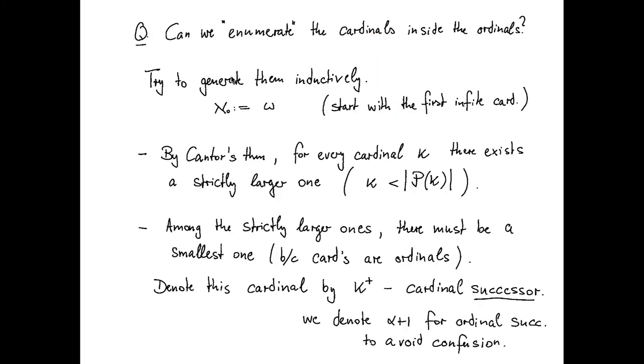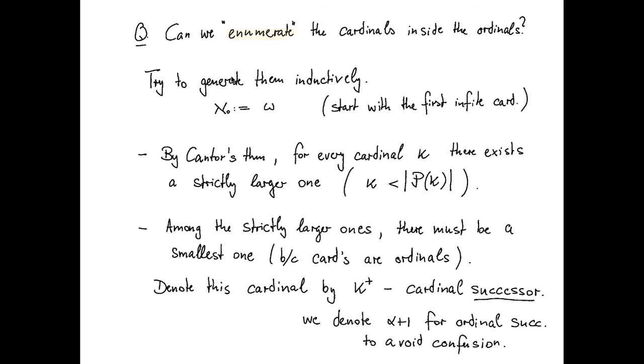So we know now that the cardinals sit inside the ordinals—every cardinal is an ordinal, but not every ordinal is a cardinal. So the question would be now, can we somehow enumerate the cardinals inside the ordinals in a nice way? And one way to do this would be to try to generate them inductively, similar to how we enumerated the ordinals by means of a transfinite process. So let's start with the infinite cardinals right away, because in the finite case everything is settled.